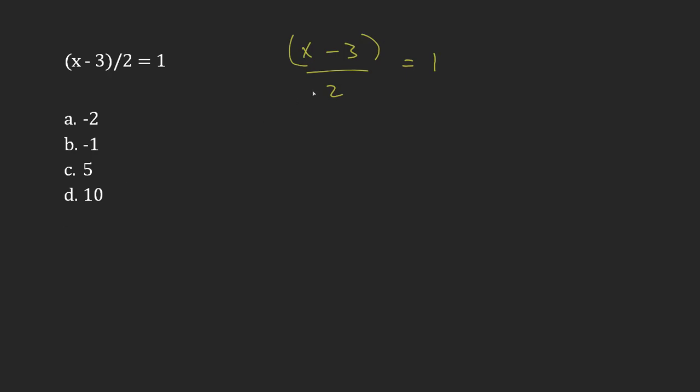So I'm going to get rid of my division first. I'm going to do the opposite. I'm going to multiply both sides. So these cancel,